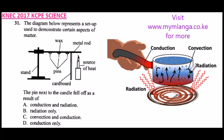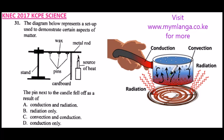Starting with conduction: heat is transferred from a hot object to a less hot object when they are connected. We can see here that because the source of heat is under the sufuria or container, the container gets hot and transfers that heat towards the handle of the cooking pot.